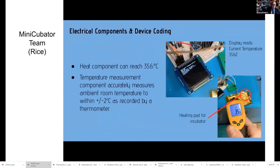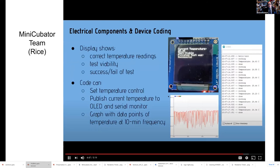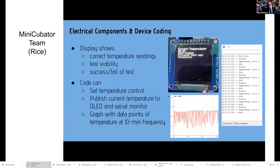We are currently developing the electrical components individually and ensuring each component is functional before combining into a single device system. The heat component of our device can reach 35.6 degrees Celsius, and our temperature measurement component accurately measures room temperature to within plus or minus 2 degrees, as recorded by an external thermometer. The photos on the right show the temperature of our heating pad and the display. The current iteration of our display shows correct temperature readings, test viability, and if a test has been a success or has failed. The code for the device can currently set temperature control, publish current temperature to the OLED and serial monitor, and graph data points of temperature at a 10-minute frequency.